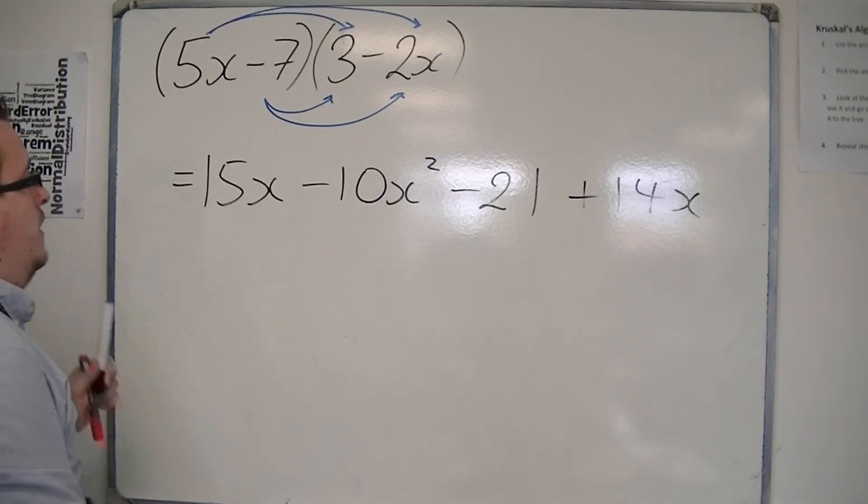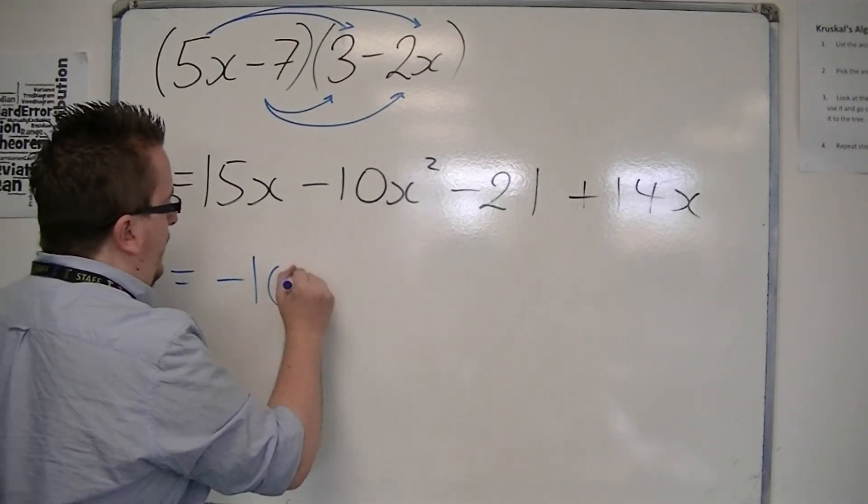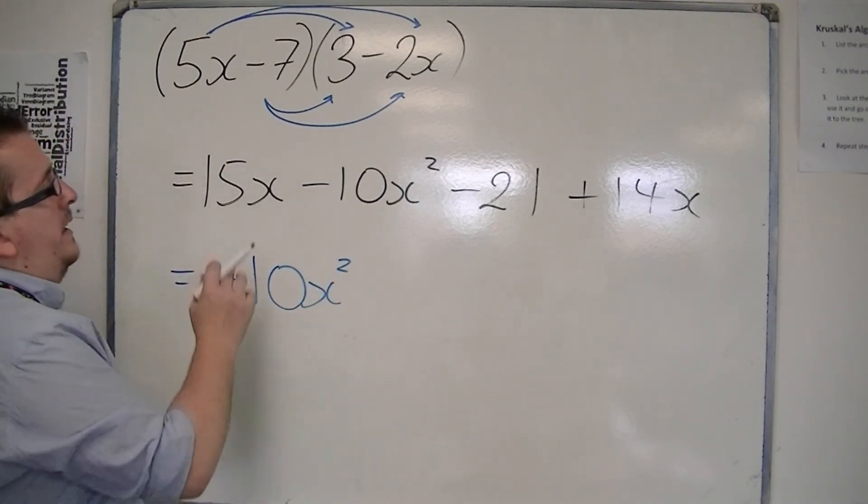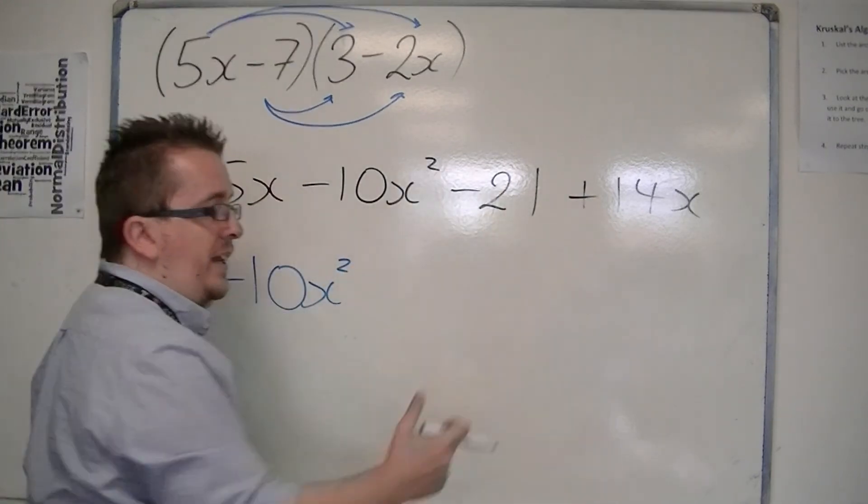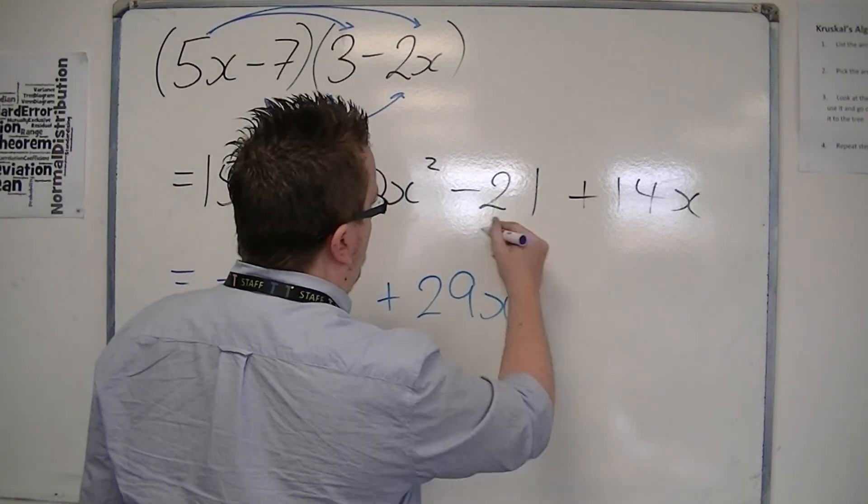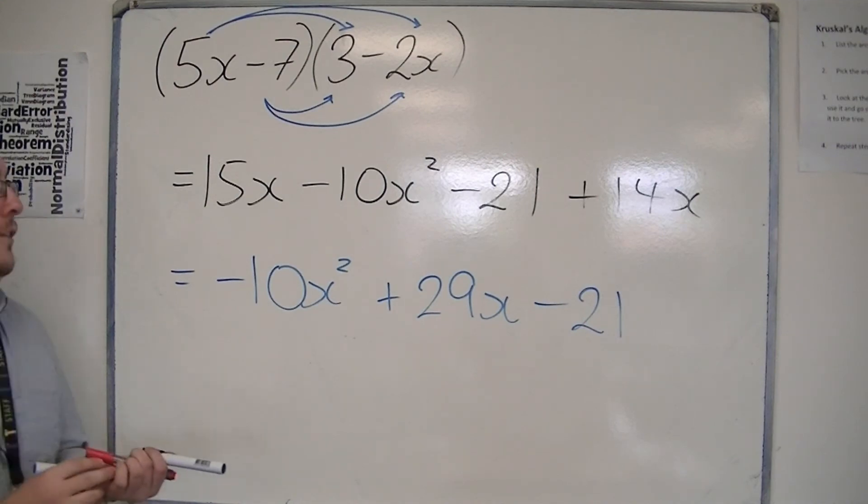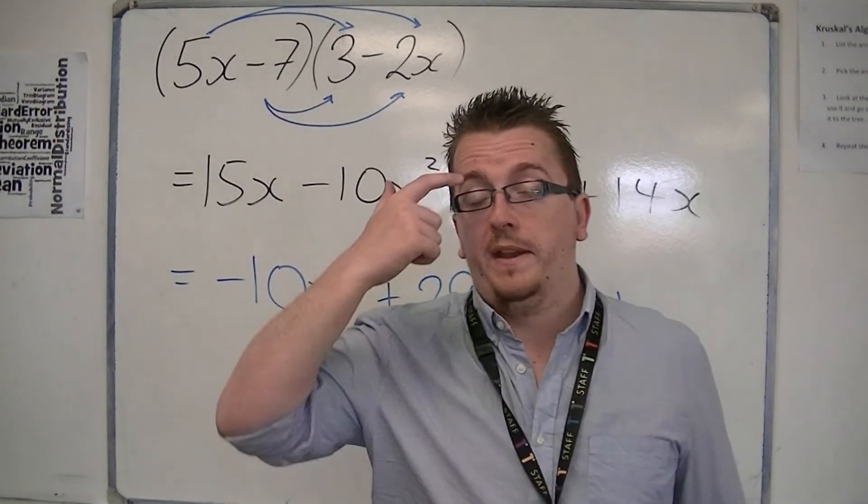We just need to reorder this a little bit. I'm going to put the minus 10x squared in front. Then we've got 15x plus 14x is 29x, plus 29x, and we still have that minus 21. So that's really as tough as you can really get for expanding brackets.